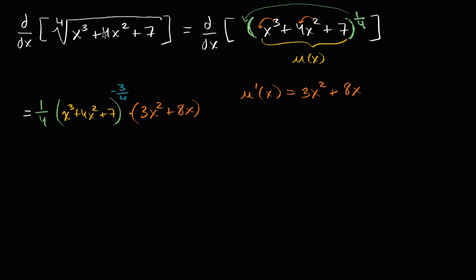The first thing to realize is the fourth root is the same as taking something to the one-fourth power — a basic exponent property. Then recognize that we have a composite function, so we take the derivative of the outside with respect to the inside, times the derivative of the inside with respect to x.